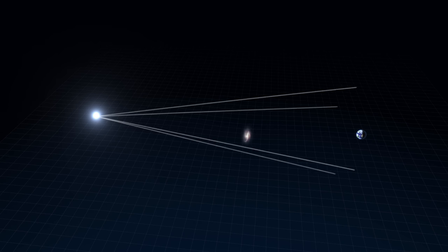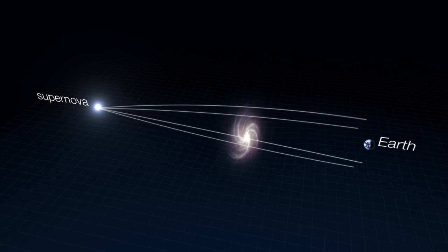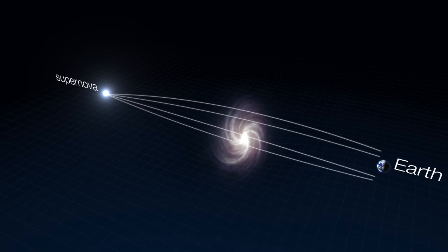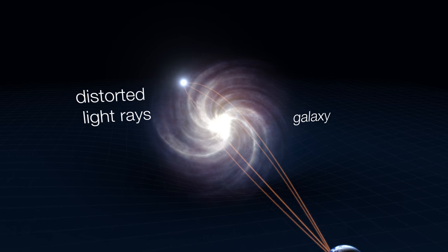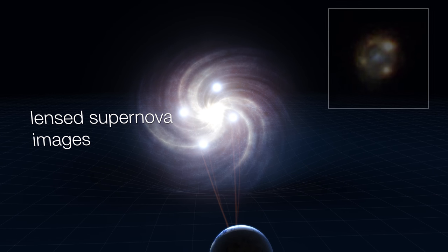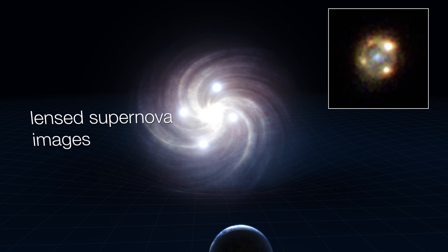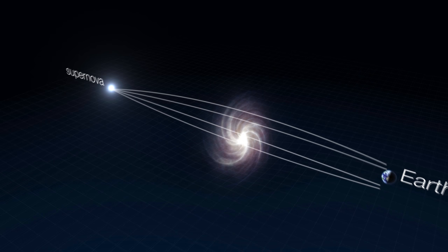Since the light travel times for the various images are unequal, intrinsic variations in the source would be observed at different times in the images. The time delay between images is proportional to the difference in the light path lengths through the lensing galaxy's spacetime, which in turn is proportional to one over the Hubble constant. So, by measuring redshifts and time delays, and by producing an accurate model for the lensing galaxy, the Hubble constant can be calculated.